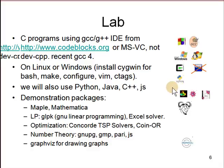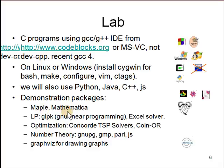We'll be using bash, make, configure, vim, ctags, and Python. For Java we'll use OpenJDK; for C++ it comes with GCC or Visual C++. JavaScript comes with Chrome or standard Node.js. We'll also use Mathematica, Maple, GNU software, and Graphviz. For linear programming we'll use GLPK. For optimization we'll use Concord TSP solvers or the COIN-OR. For number theory we'll use GNU, PG, GMP, and Pari. Graphviz is used for drawing graphs.